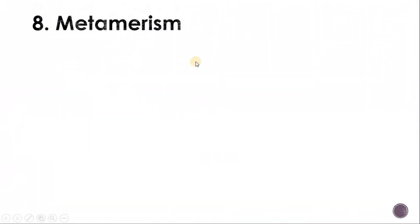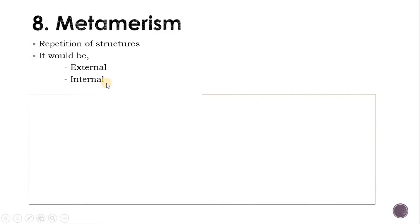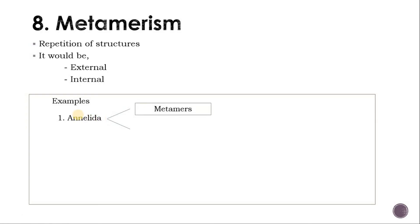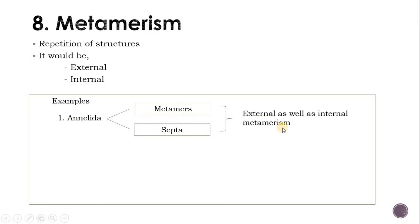Now we jump onto another parameter: metamerism. What is metamerism? In simplest language, the repetition of some structures in the animal body is called metamerism. It can be external or internal. Metamerism is well shown in the Annelida phylum. There is internal as well as external metamerism. The animal body is divided externally by metameres and internally by septa. So true metamerism is seen in Annelida.